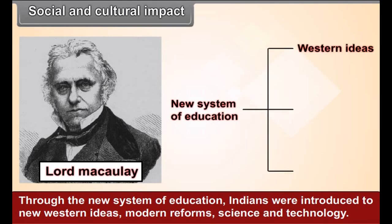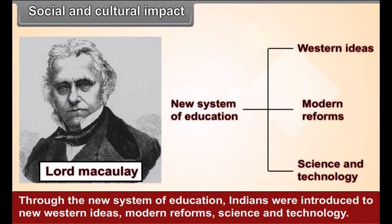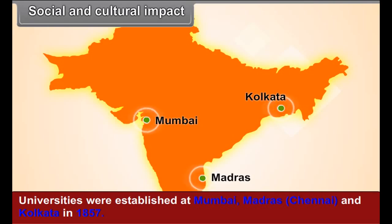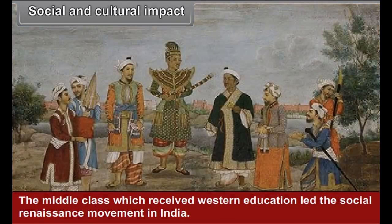Through the new system of education, Indians were introduced to new Western ideas, modern reforms, science and technology. Universities were established at Mumbai, Madras, Chennai and Kolkata in 1857. The middle class which received Western education led the social renaissance movement in India.